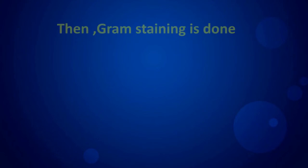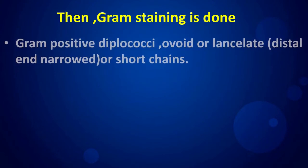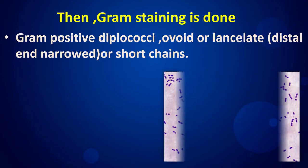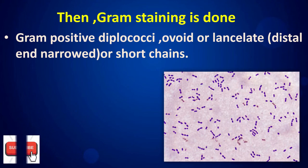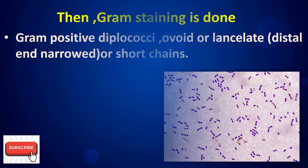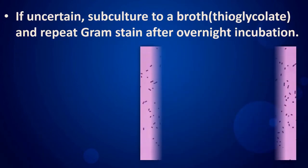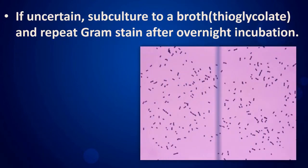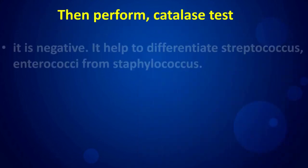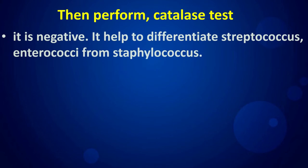Gram staining is then performed. Streptococcus pneumoniae appears as gram-positive diplococci, oval-shaped, with a distal end that is narrowed, or in short chains. If uncertain, subculture to a broth such as thioglycolate and repeat the gram stain after overnight incubation. The catalase test is negative, which helps differentiate Streptococcus and Enterococcus from Staphylococcus.